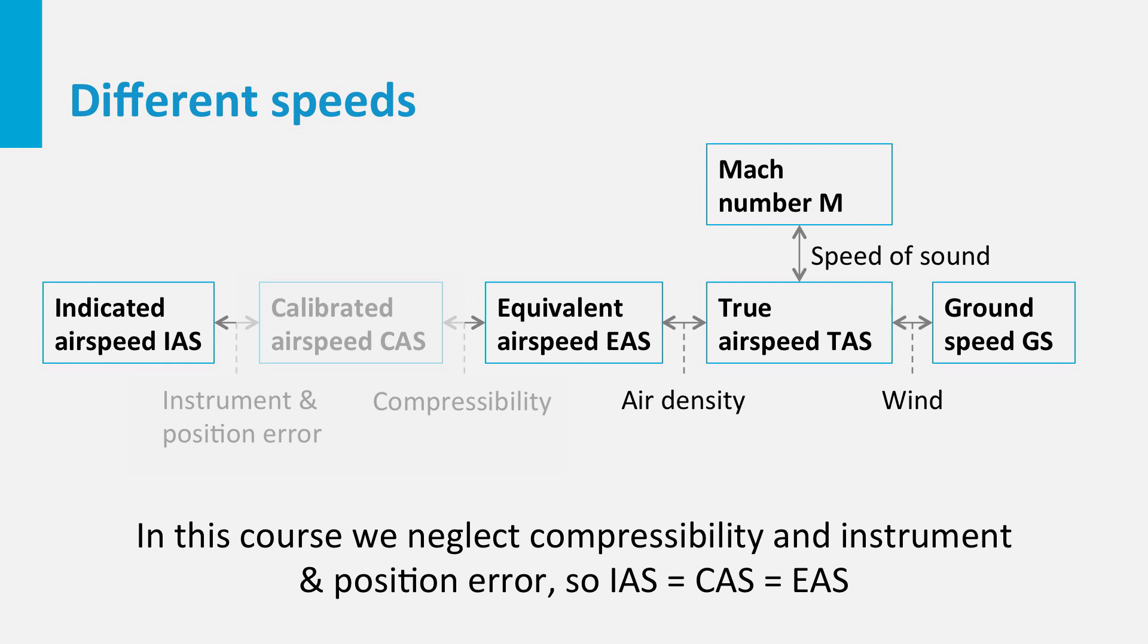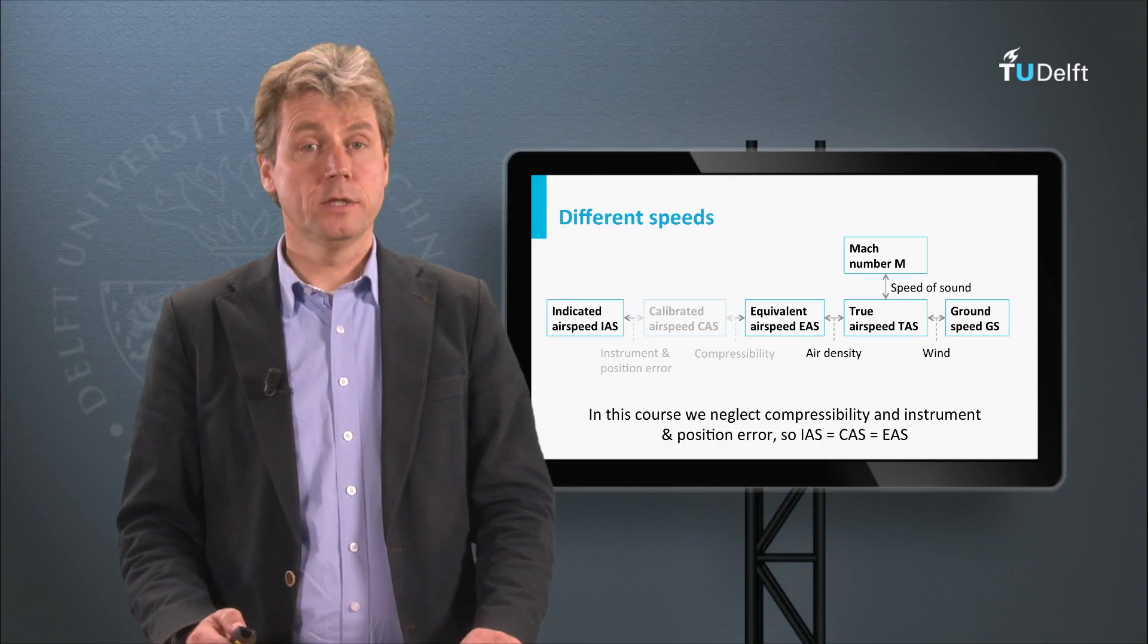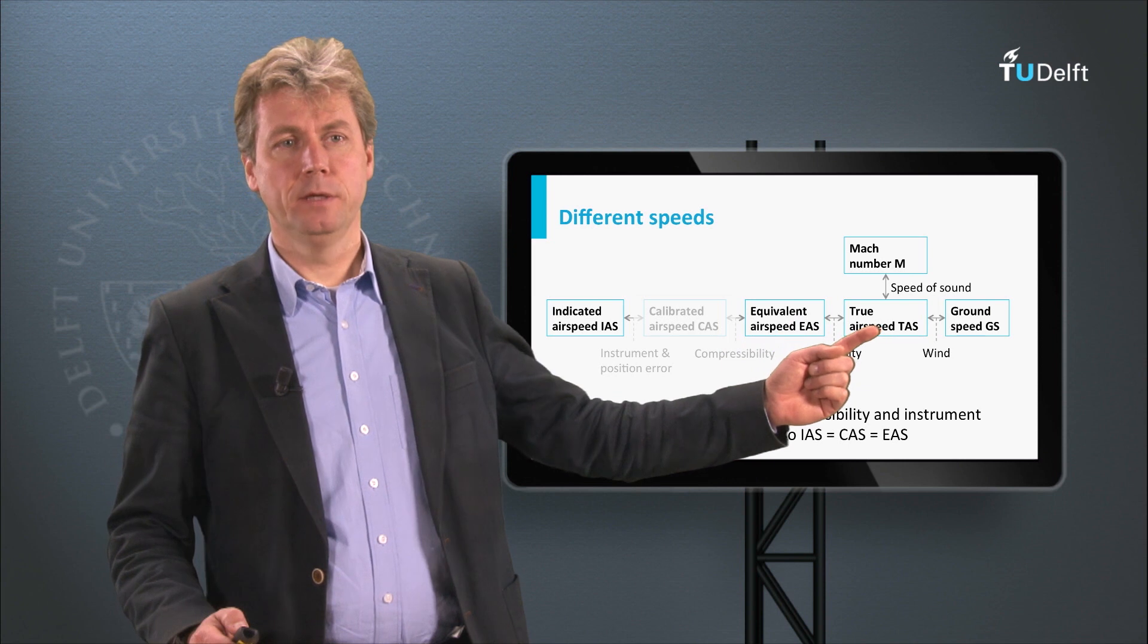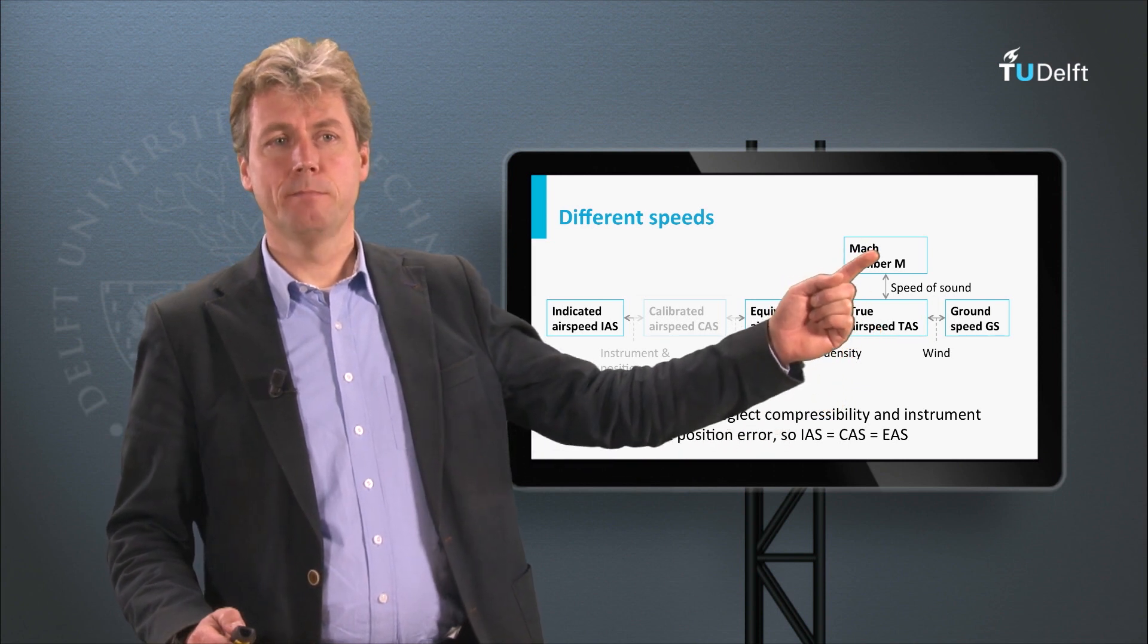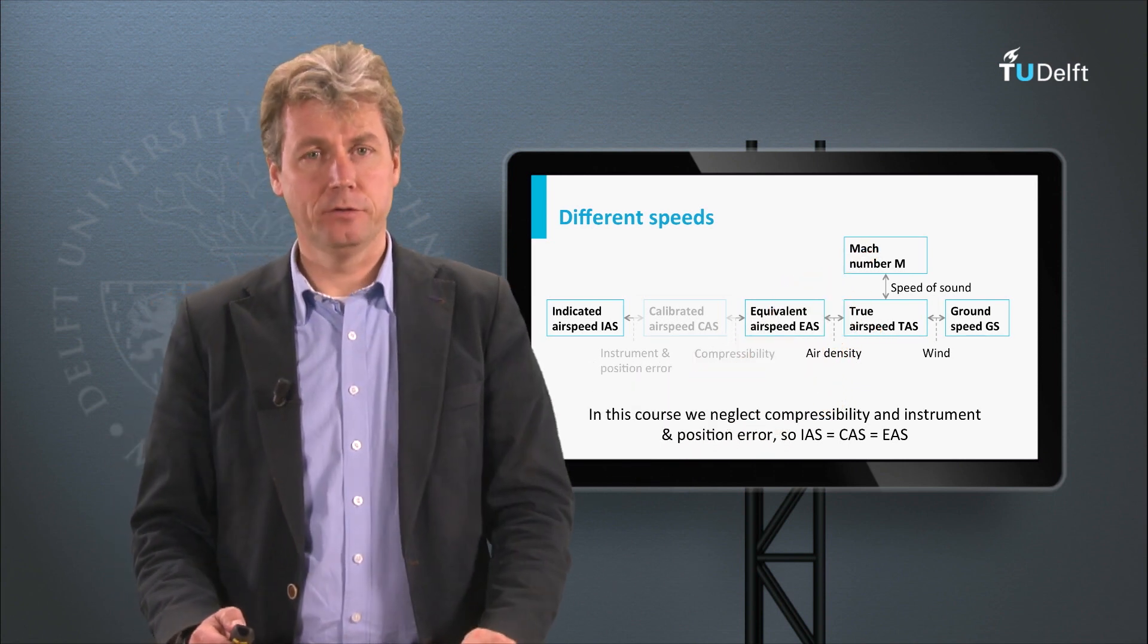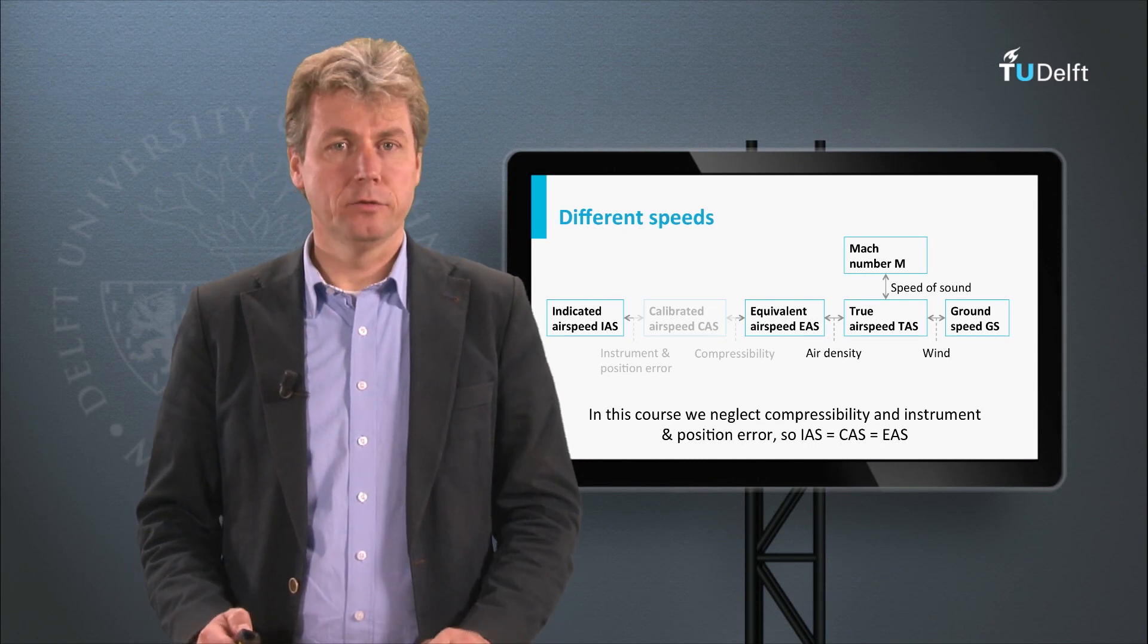Then we saw that the relation between equivalent airspeed and true airspeed depends on the air density. And if you want to know the ground speed, you need to take the wind into account. To get the Mach number you need the speed of sound, which also depends on the altitude by the temperature. And this gives you the Mach number, the fraction of the speed of sound which you fly. So this means that the same true airspeed will result in a different Mach number for different altitudes. So we need to know the altitude as well. And this is exactly the topic of the next lecture on navigation and instruments.